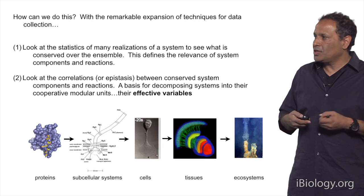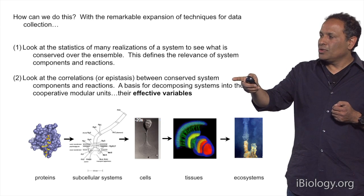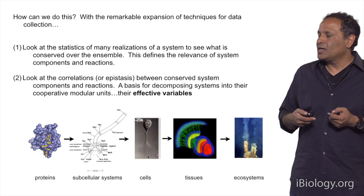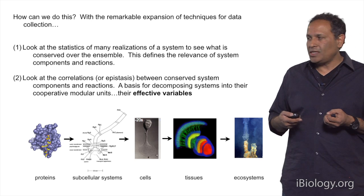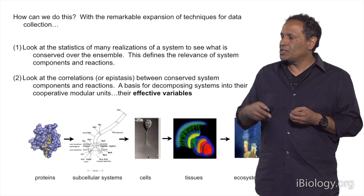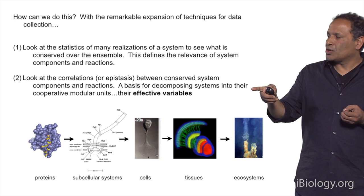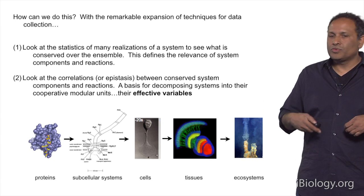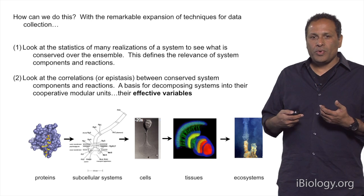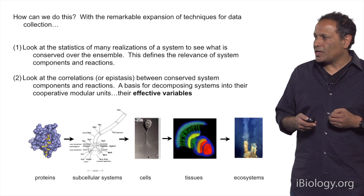Things that are invariant over an ensemble tend to be relevant. The second step, since we're interested in cooperativity, is to look at correlations or epistasis between the conserved system components and reactions. Such a correlation analysis is a basis for decomposing systems into their appropriate cooperative modular units — that is, the effective variables.